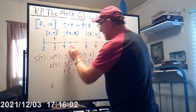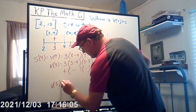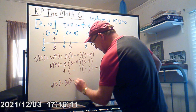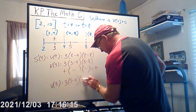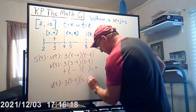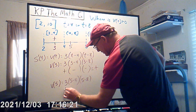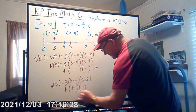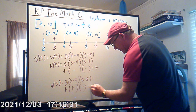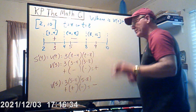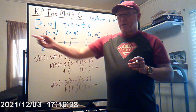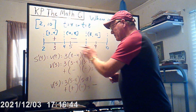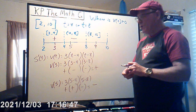Between 4 and 8, pick t = 5. V(5) = 3(5 − 4)(5 − 8) = 3(1)(−3). That's positive times positive times negative, which is negative. So the particle is moving to the left between t = 4 and t = 8. At t = 4 and t = 8, the velocity is zero — the particle has stopped and is likely changing direction.